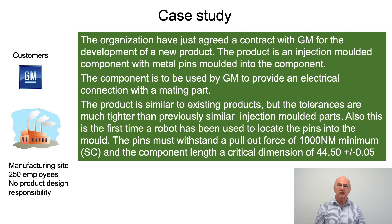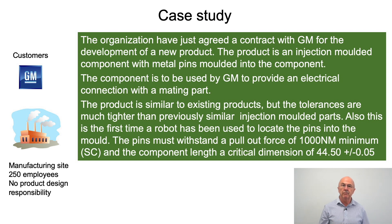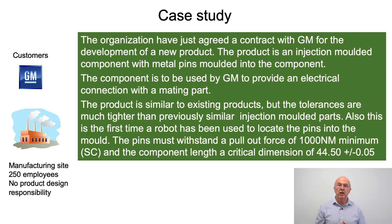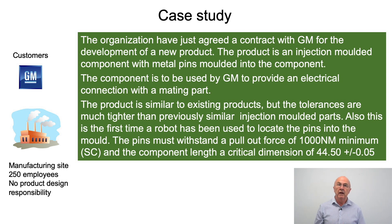To give some idea about what this looks like, let's look at this case study. An organisation has just agreed a contract with GM for the development of a new product — an injection moulded component with metal pins moulded into it, used by GM to form an electrical connection with a mating part. This product is similar to others but has much tighter tolerances, and importantly, a robot will be used to locate the pins into the injection moulding tool. There is a special characteristic about the pull-out force of the pins and a critical dimension specified in the GM specification. GM are design responsible, so we don't need to develop the design FMEA — we're going to be looking at developing the process FMEA.